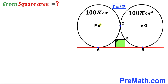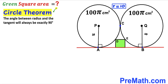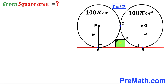In the next step I connect center P with point A, and likewise center Q with point B. These are radii, so both equal 10 centimeters. By the circle theorem, the angle between a radius and a tangent line is always exactly 90 degrees, so both these angles are 90 degrees. Now focusing on the green shaded square, I label its side length as x, so all side lengths are x across the board.